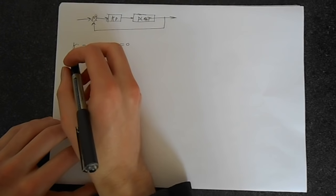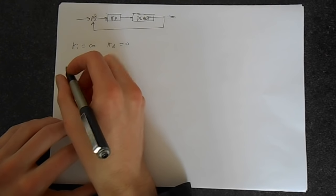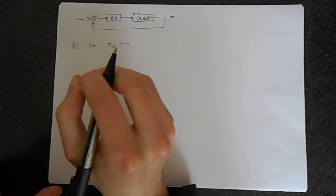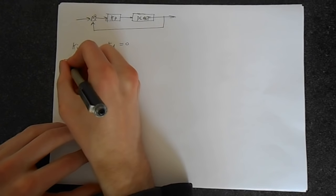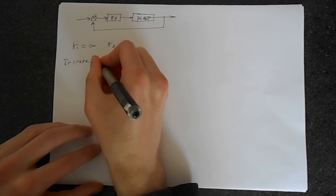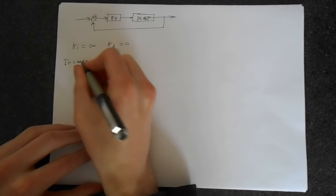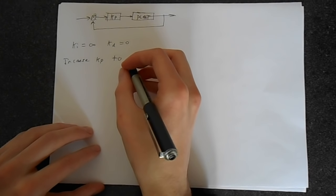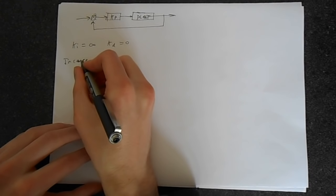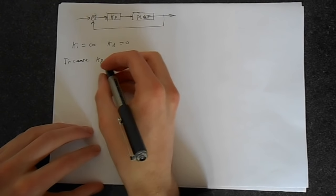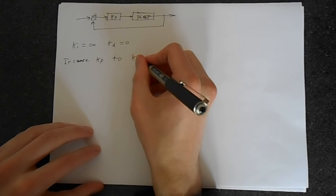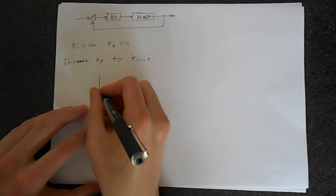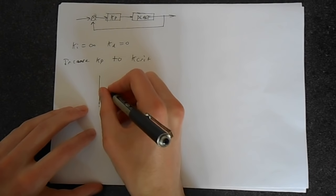Okay, so we want to determine this thing that we're going to call kcrit or kcritical. This is the point at which the system becomes marginally stable, so you get a little bit of oscillation. So you increase KP to kcrit.